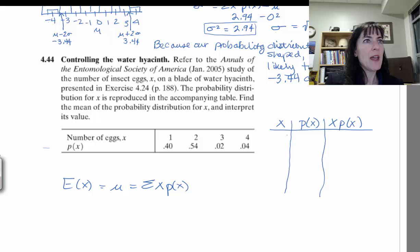For this one I have just four values: one, two, three, and four. My probabilities are 0.4, 0.54, 0.02, and 0.04.